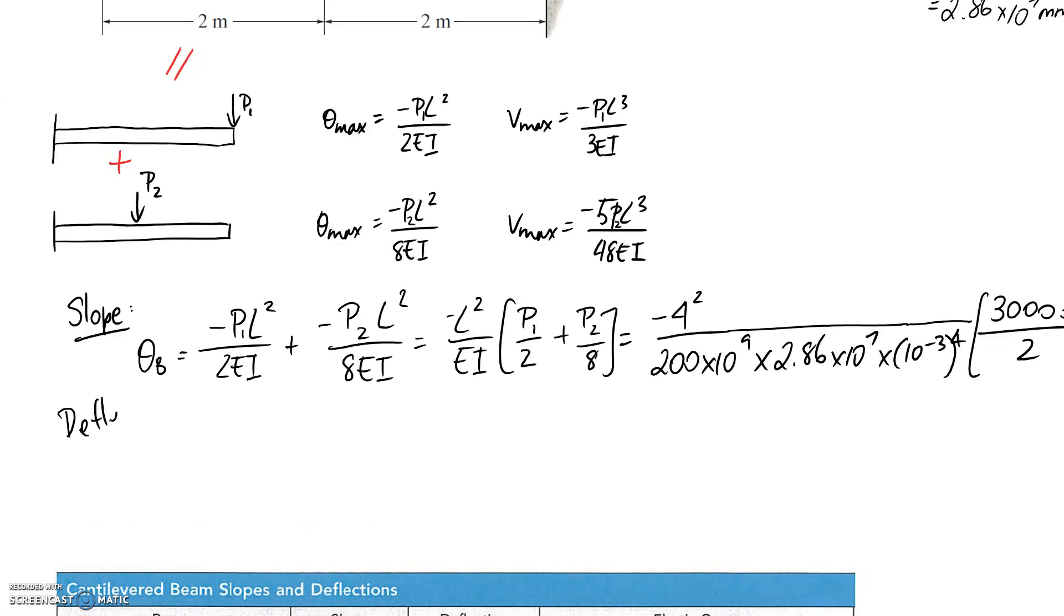That's the first bit done. The next bit is looking for the deflection, and we just need to apply exactly the same method. So we can say that the deflection at point B, which is the maximum, is going to be these two cases added together.